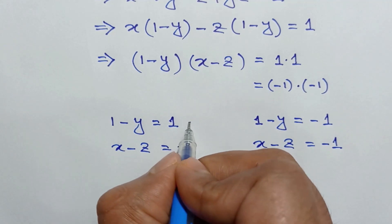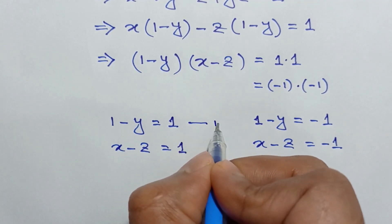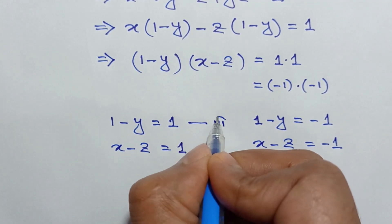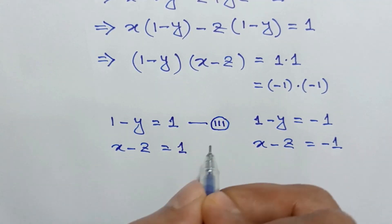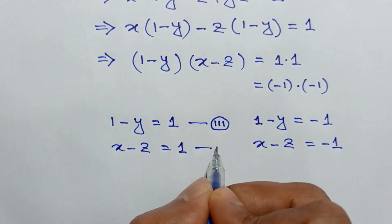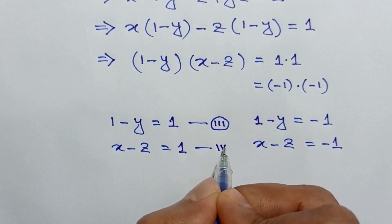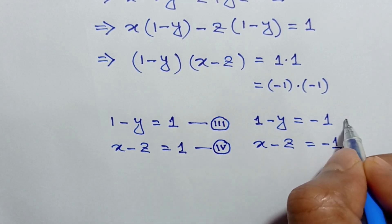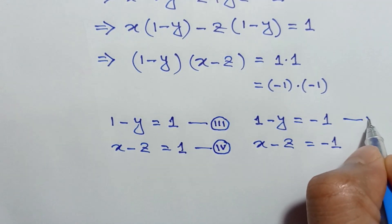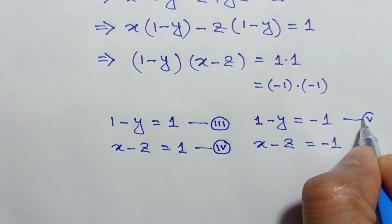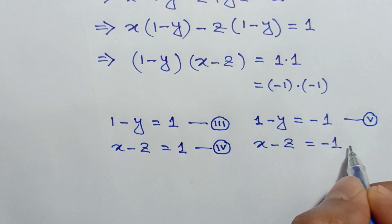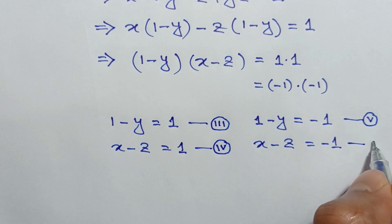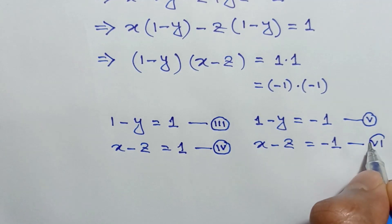Case one: 1 minus y equals 1 and x minus z equals 1 — call these equation 3 and equation 4. Case two: 1 minus y equals negative 1 and x minus z equals negative 1 — call these equation 5 and equation 6.